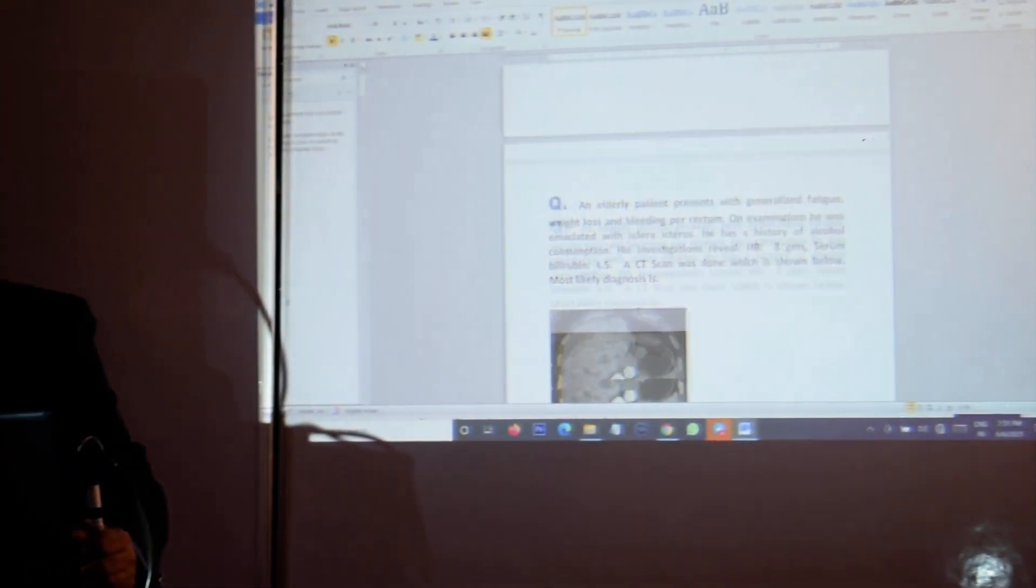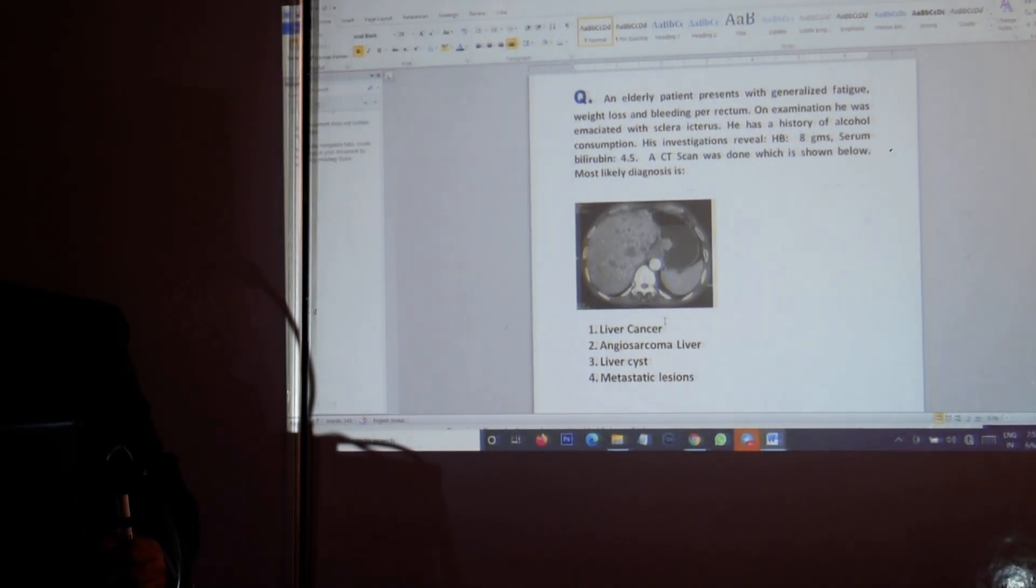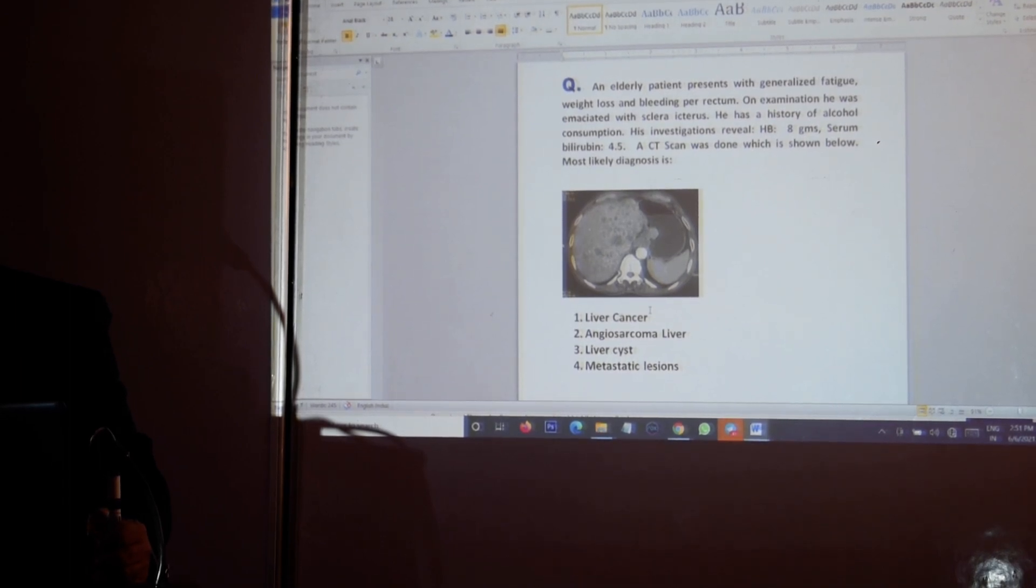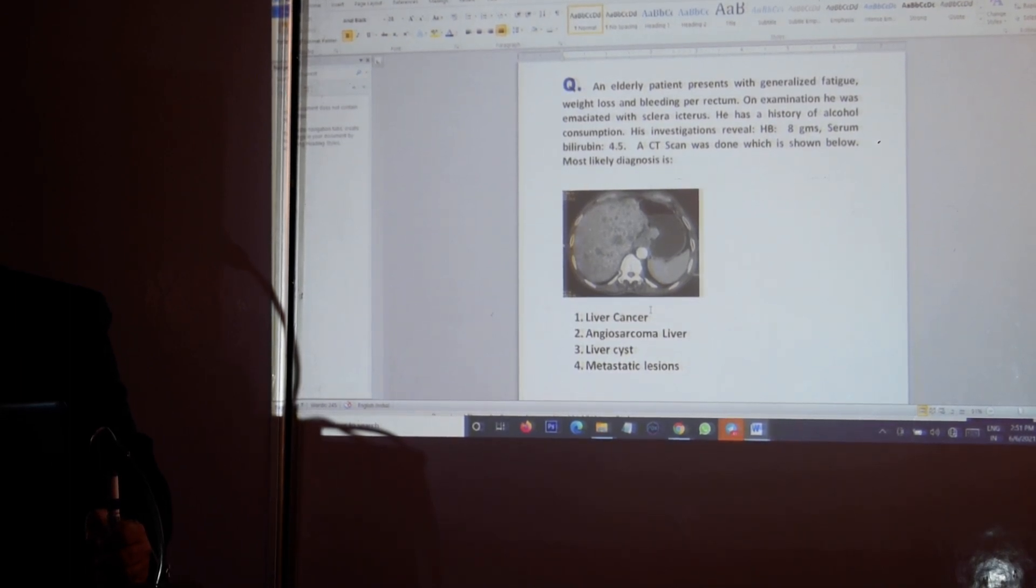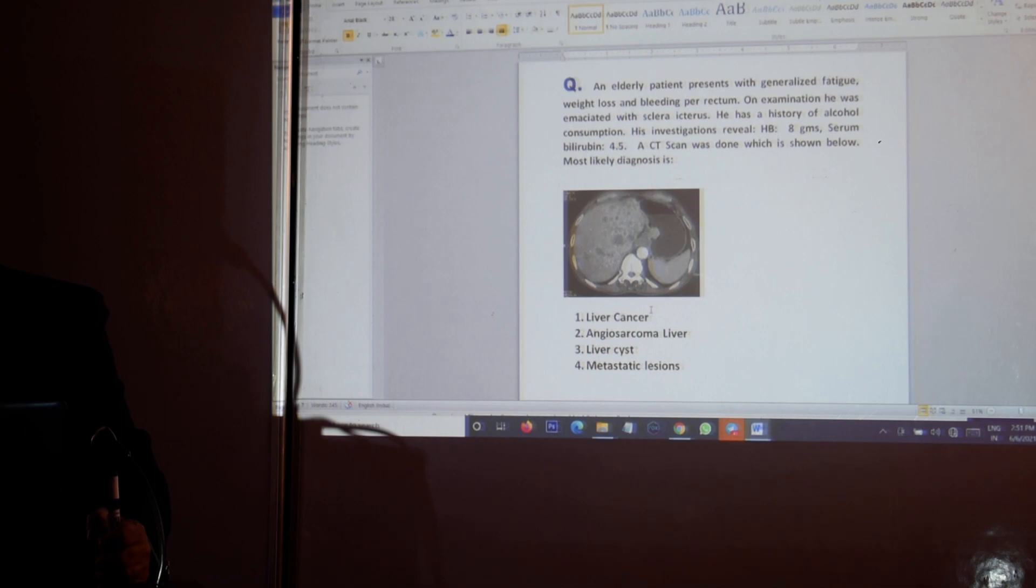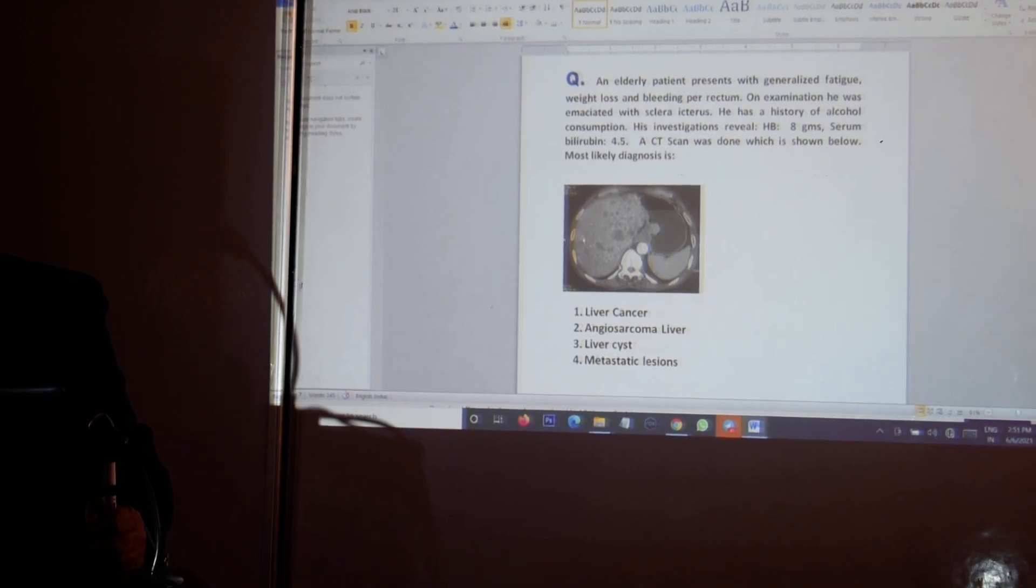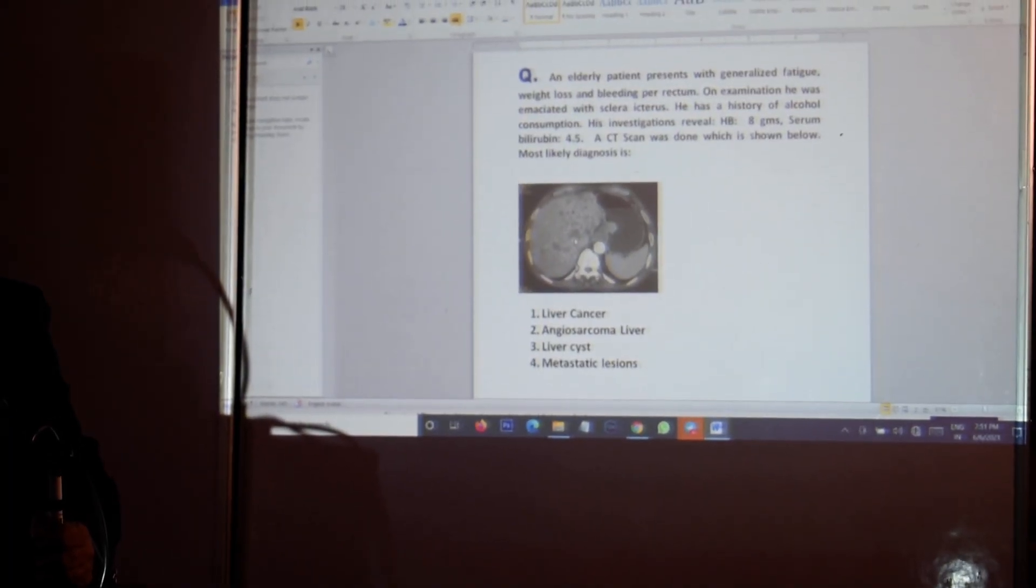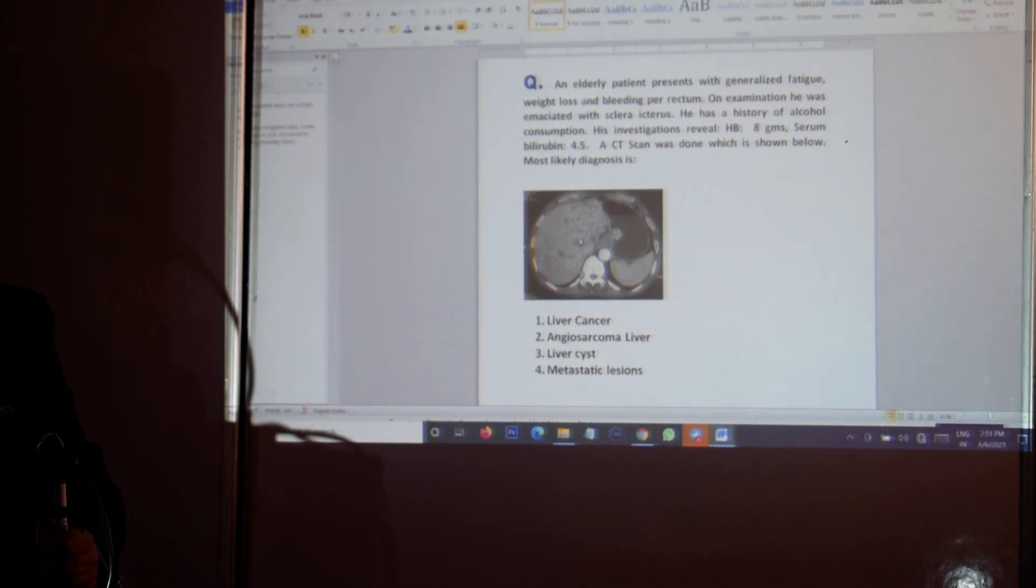Moving to question number 2. This assumes an elderly patient with generalized fatigue, weight loss, bleeding per rectum and on examination he has got scleral icterus and history of alcohol consumption. Hemoglobin is low, anemic, serum bilirubin is 4.5 and CT scan is shown. If you have a look at the CT, the CT scan of the abdomen is shown and this is the area of the liver. You can see, if you focus on the liver, certain lesions.